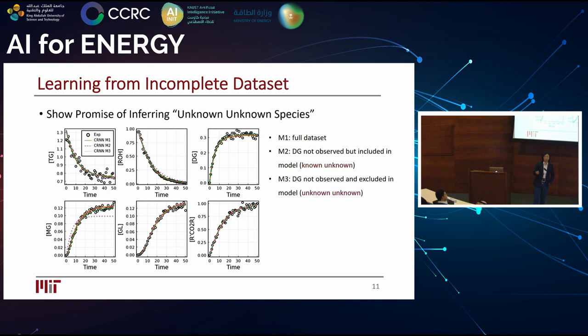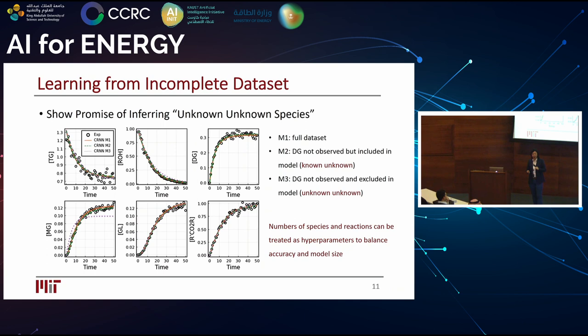The third case, where one species cannot be observed and the modeler doesn't know it's missing, shows the purple curve failing to predict some species. The neural network tells us we are missing important intermediate steps. But it gives us the opportunity — if we can guess the number of species and reactions involved, we can identify the missing physics. We treat the number of species and reactions as hyperparameters, related to nodes in the input and hidden layers, to tune accuracy and balance model size.